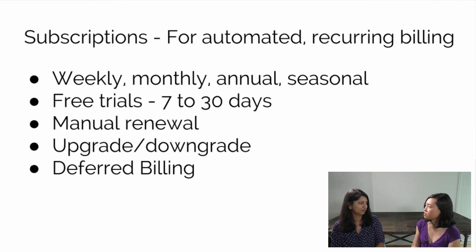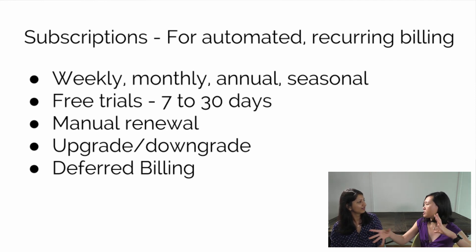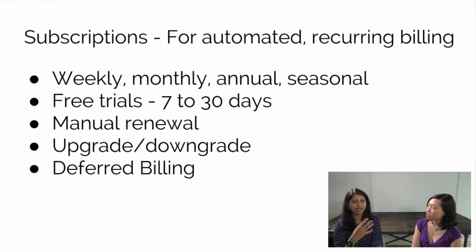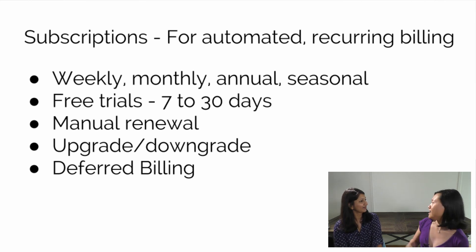Can I have different lengths of subscription — monthly, annual? Can users upgrade from monthly to annual? You can do all of that. You get a lot of options: weekly (seven days), monthly, annual. You can also do seasonal, which has a specific start date and end date — useful for a sports season or holiday season. Free trials on subscriptions are also available: minimum seven days, maximum 30 days. You can upgrade and downgrade between subscription tiers, and Google will apply the balance on a prorated basis. These are all features they recently introduced.